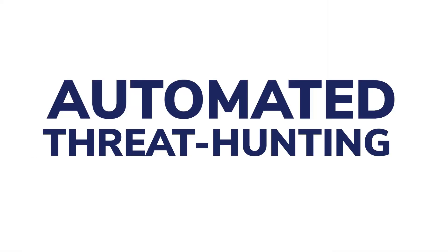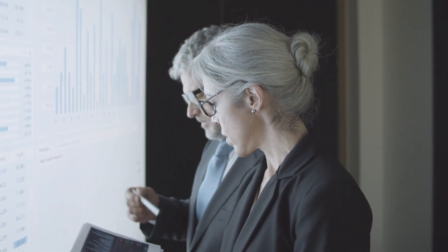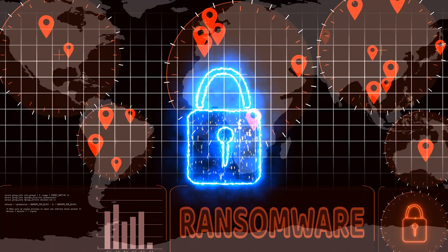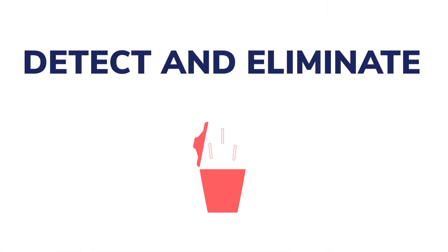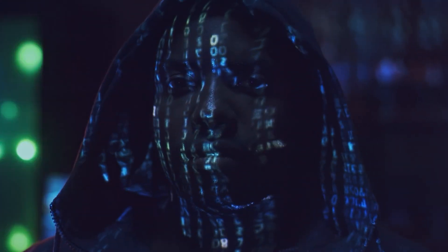Enter automated threat hunting. As we have seen in previous videos, traditional threat hunting involves security analysts manually investigating systems and networks to identify potential threats that can bypass traditional detection security measures. The goal is to detect and eliminate threat actors as soon as possible within each attack phase while improving the organization's response time and accuracy when dealing with sophisticated cyber threats.